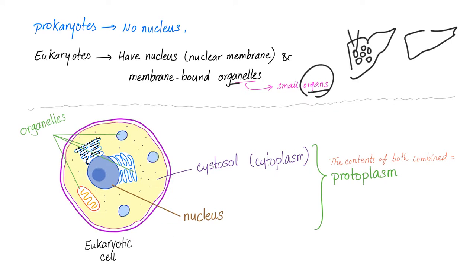So here is the cell. These are called organelles. The center is the nucleus, which is the brain of the cell. This is the cytosol or cytoplasm, and here is the cell membrane, also known as plasma membrane.